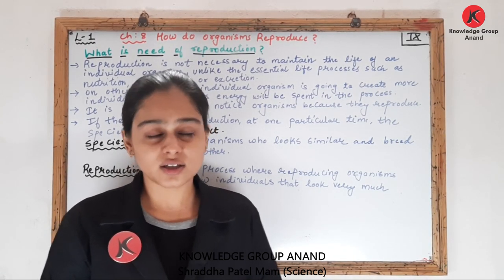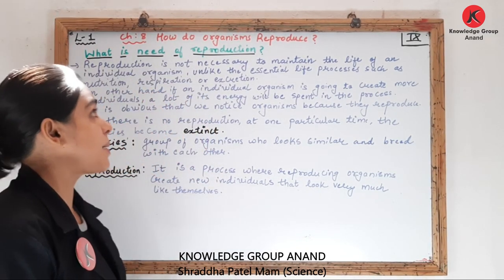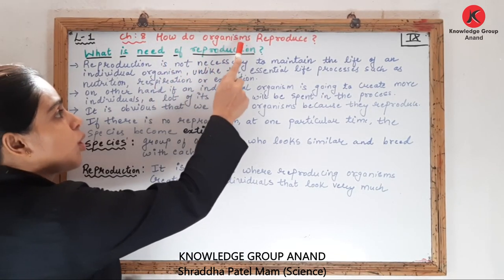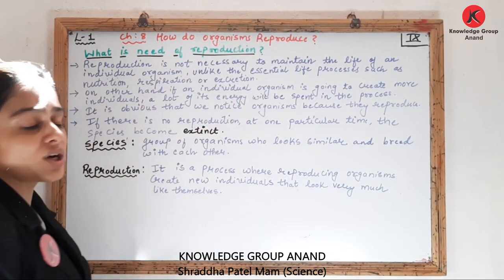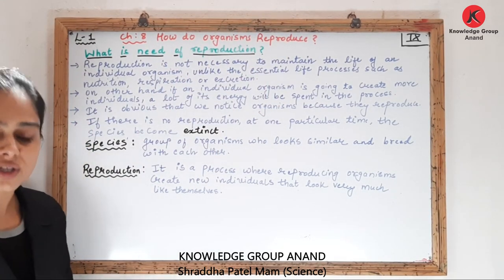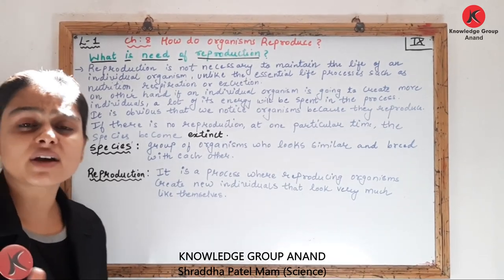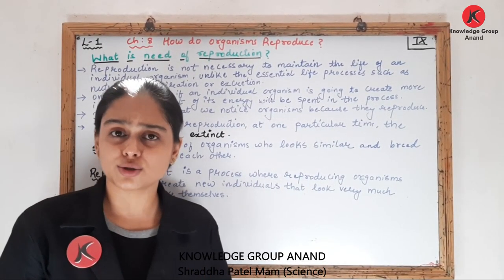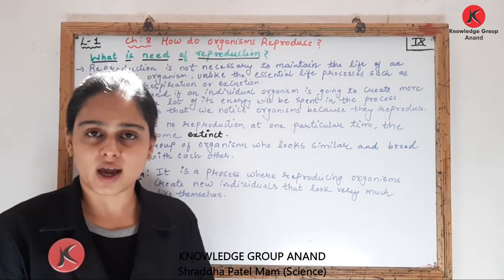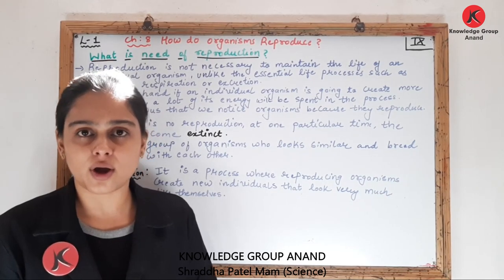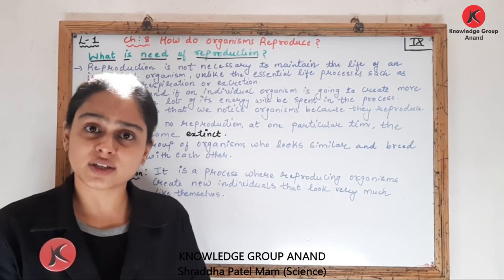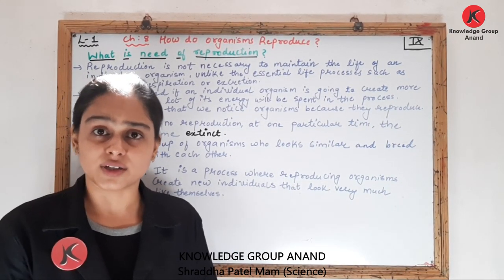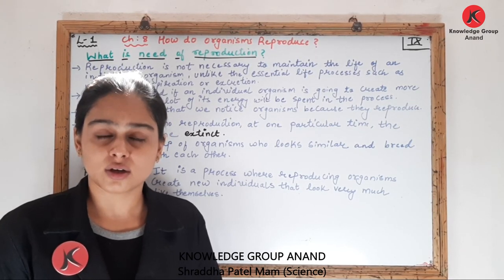So let us start chapter number 8: How do organisms reproduce? Is there any need of reproduction? Is it an essential life process or not? Is it necessary or not?